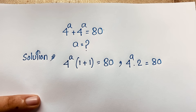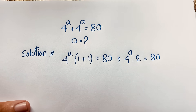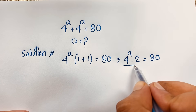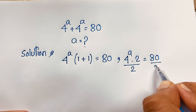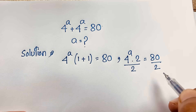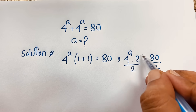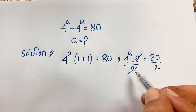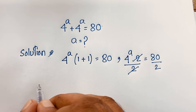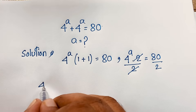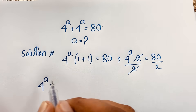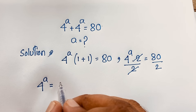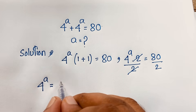Since 1 plus 1 equals 2, we have 4 to the power a times 2 equals 80. Now if I divide both sides by 2, the two cancels out and we find 4 to the power a is equal to 80 divided by 2, which is 40.